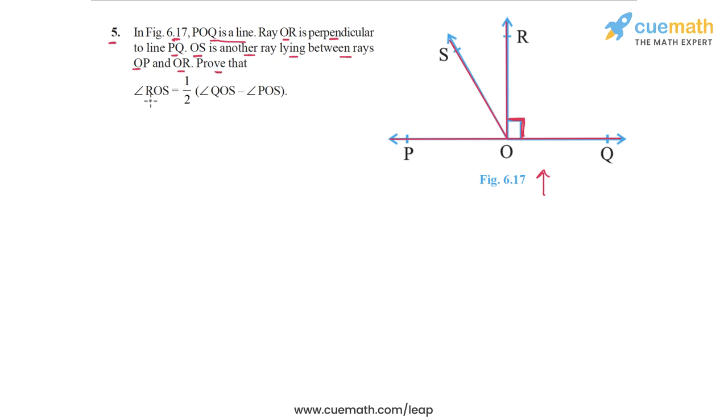We have to prove that angle ROS can be written as half of angle QOS minus angle POS. Let's highlight both these angles. Angle QOS is this whole angle here, and angle POS is this angle here. We need to show that angle ROS equals half the difference of these two highlighted angles. Let's figure out how to solve this problem.